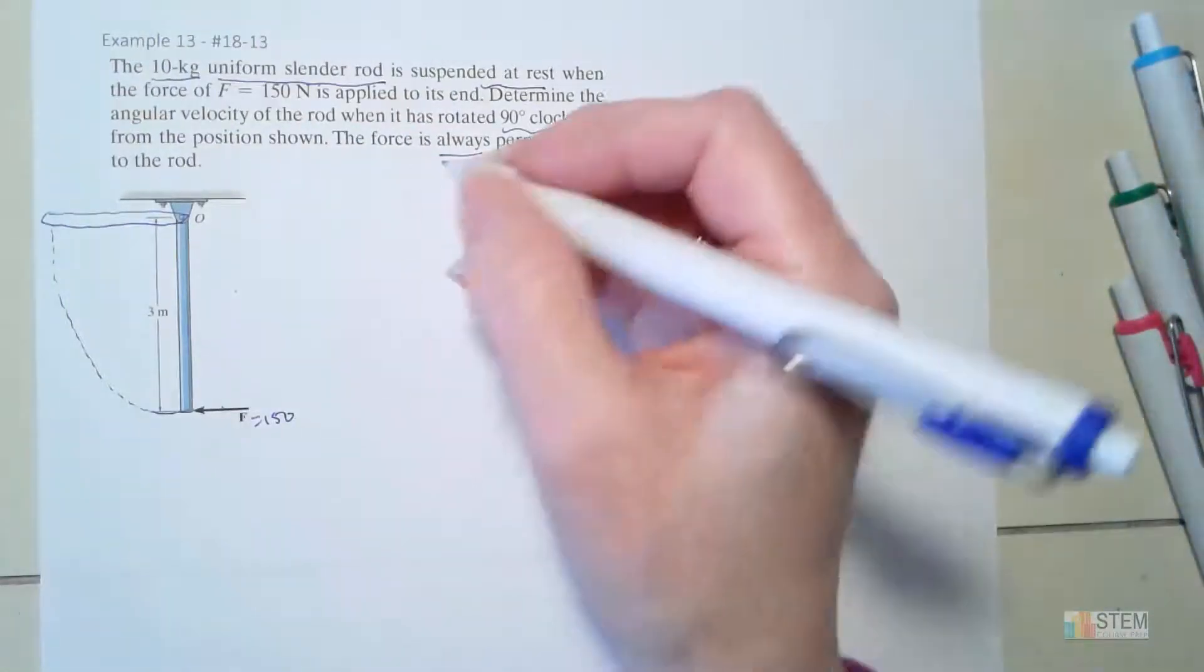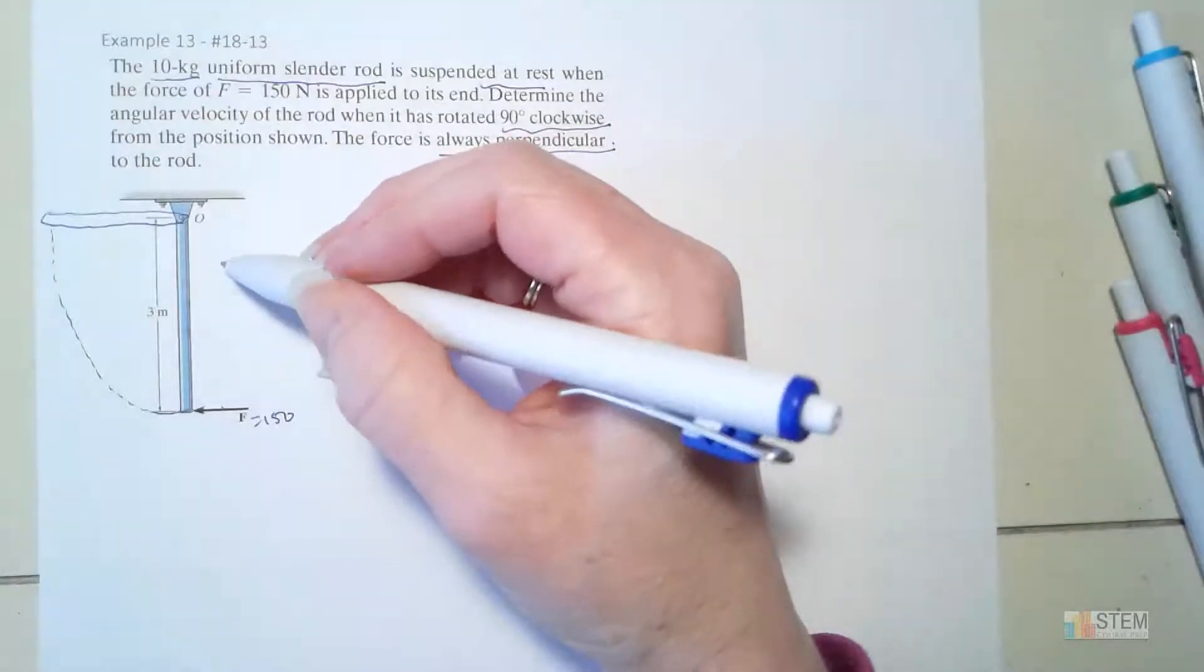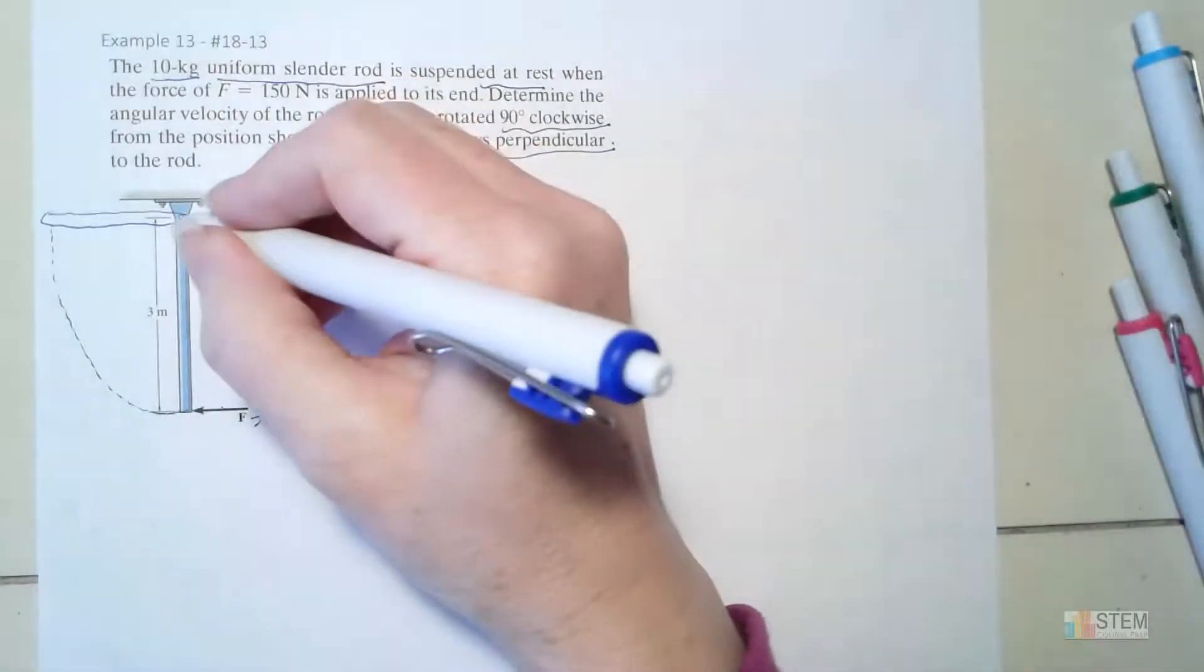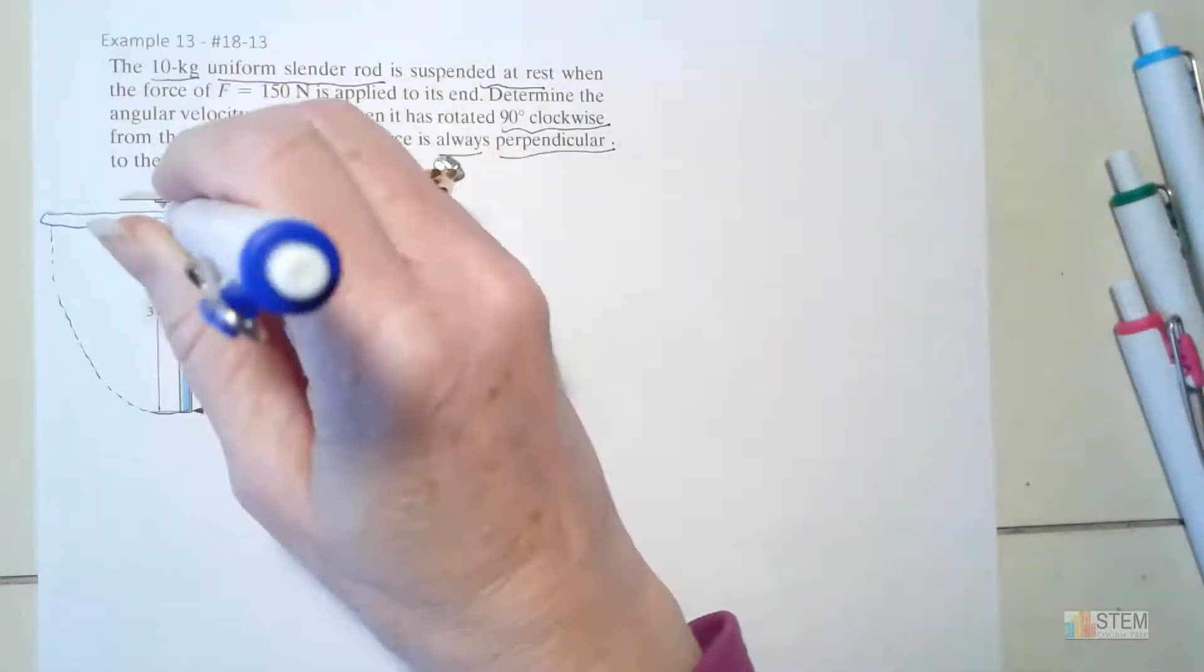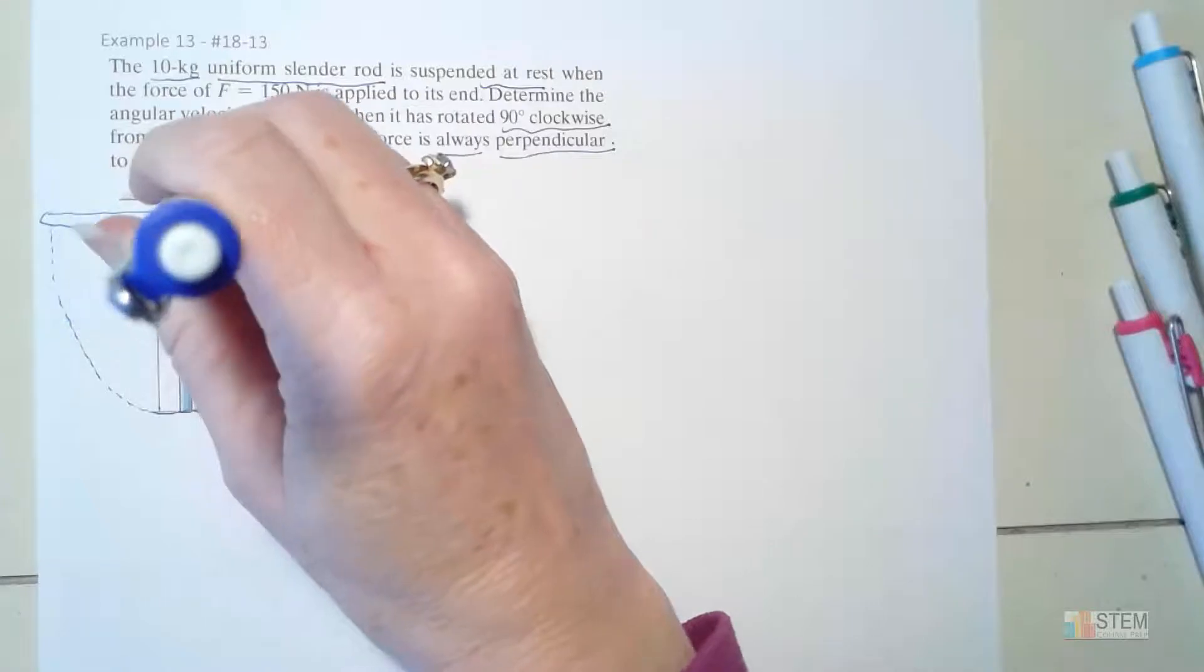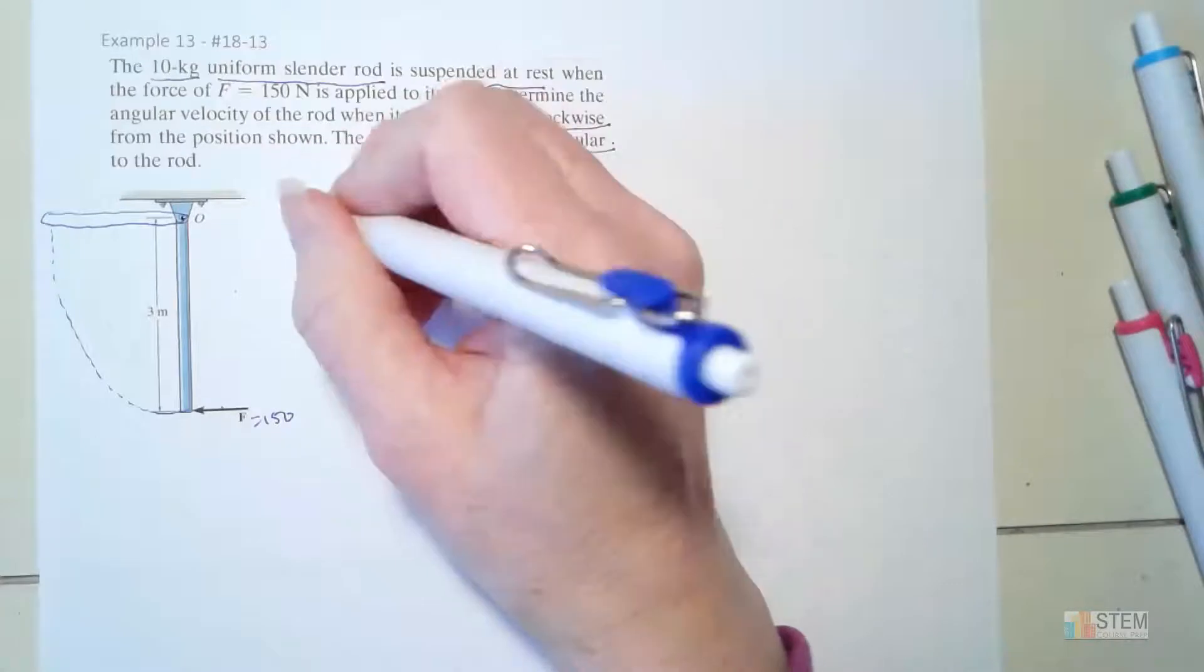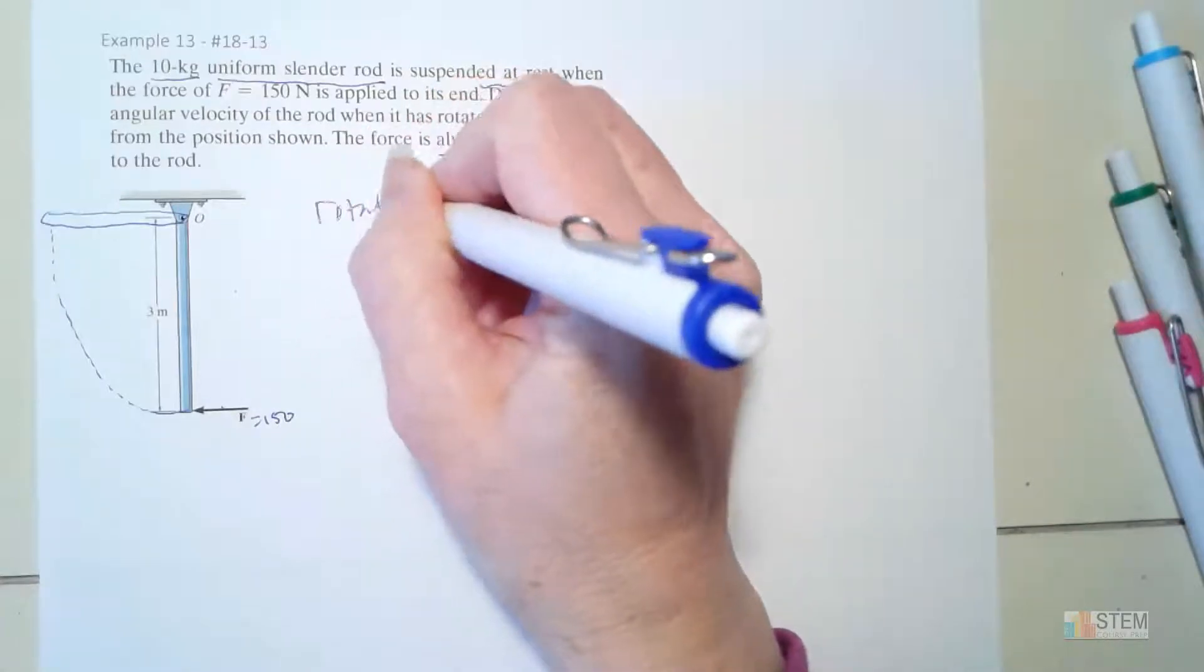So that indicates to us that we need to pay attention to the moment of inertia of this bar. And we're also going to be rotating this bar so that it's 90 degrees clockwise, so it's going to end up being in this position right here. Now the whole time we're moving this way, F is going to be perpendicular to the bar. So let's write that down.